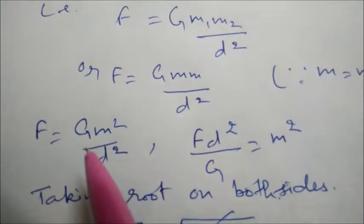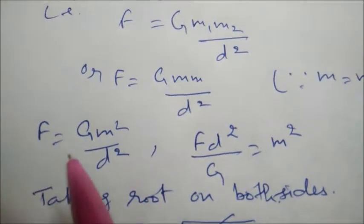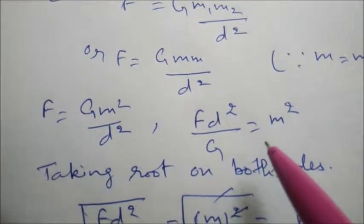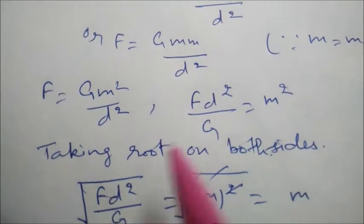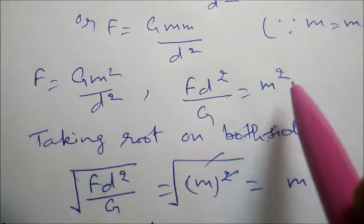Now we will move G and D square to the other side and it will become F D square upon G equals M square. Taking root on both sides to remove the square of the mass.